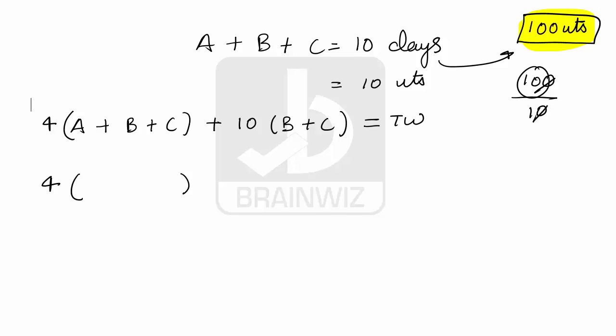Now A and B have not worked for one day, they have worked for four days, so their one day work is 10 units, so we can substitute here 10 units plus 10 days B and C have started work together to complete the total work. As we all know that total work is 100 units.